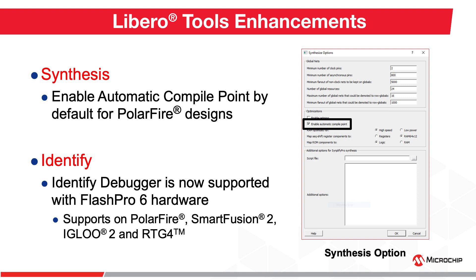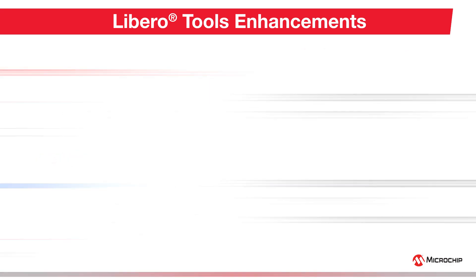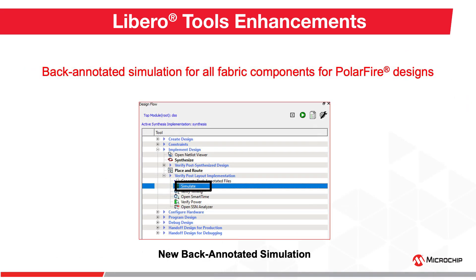FlashPro 6 hardware now supports the Identify Debugger tool for PolarFire, SmartFusion 2, Igloo 2, and RTG4 designs. Libero version 12.4 also enables back-annotated simulation for fabric components in PolarFire designs.